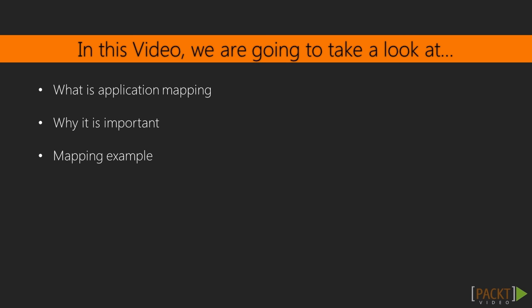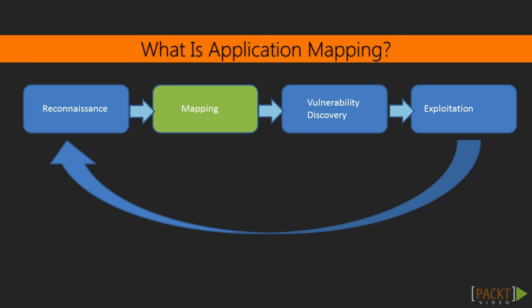Remember in section 1 we learned about the penetration testing process — the second phase was mapping. In the mapping phase we need to build a map or catalog of the application's resources and functionalities. As a security tester, we aim to identify all the components and entry points in the app. The main components we are interested in are the resources that take parameters as input, the forms, and the directories.